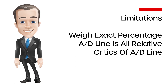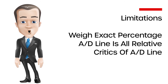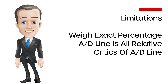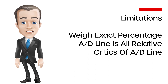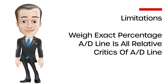Technical analysis tools should not be used in isolation, and the AD line is no different. For example, the AD line does not weigh the exact percentage of a stock's move — only whether it is an advance or decline. Therefore, a stock could set a record for the most value lost in a single day, but the AD line will only register it as a decline, giving it the same weight as a stock that dropped just 0.1%. The AD line is relative — it comes down to the difference in daily price changes and the number of positive versus negative days.